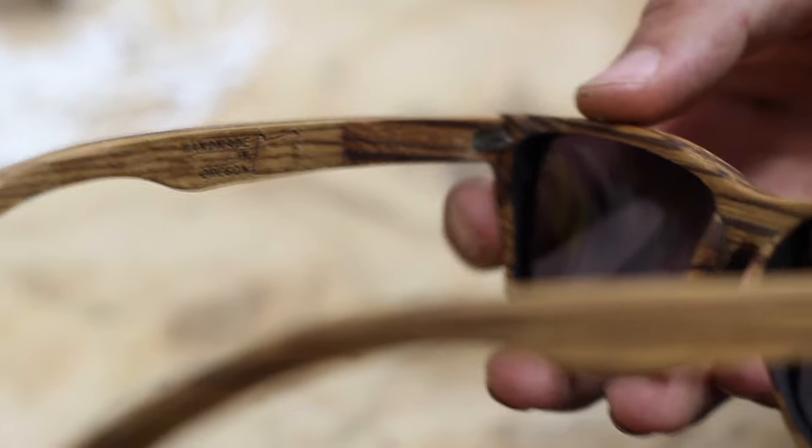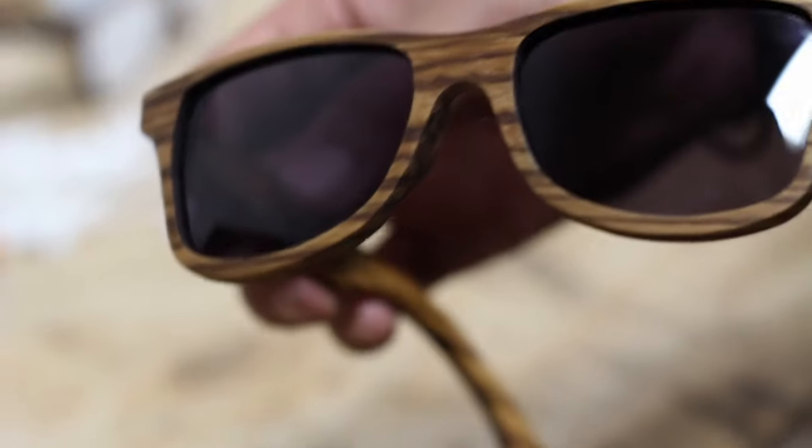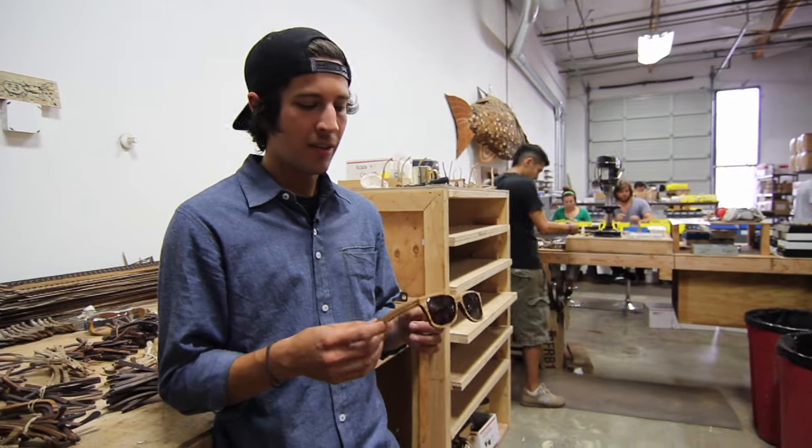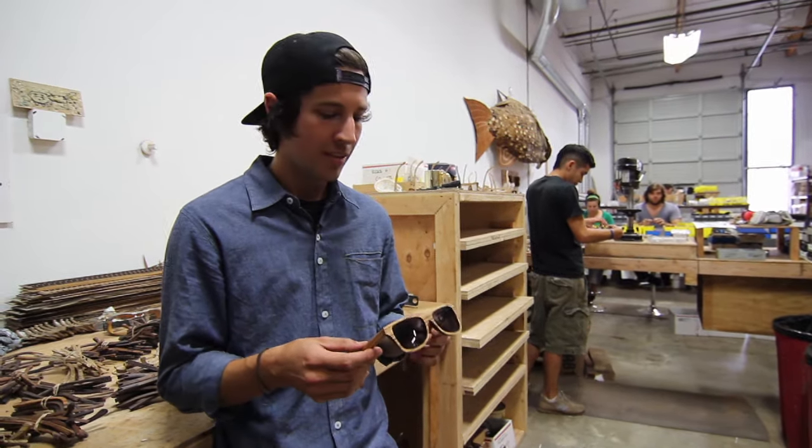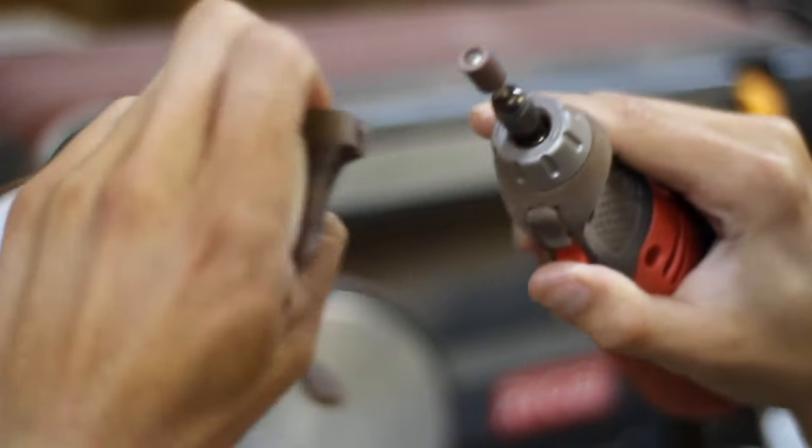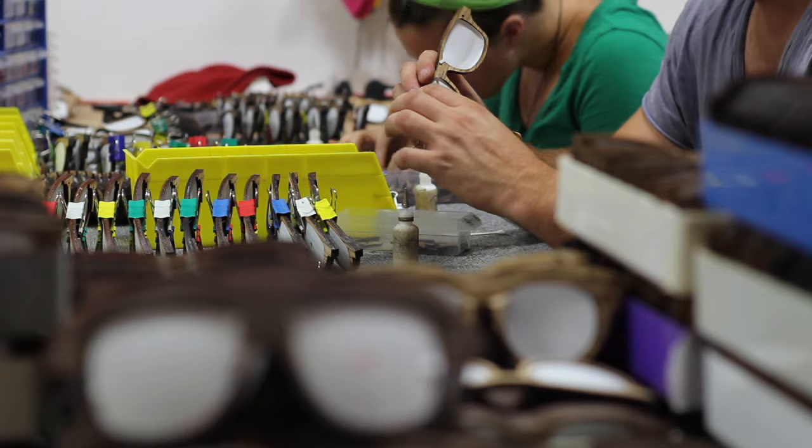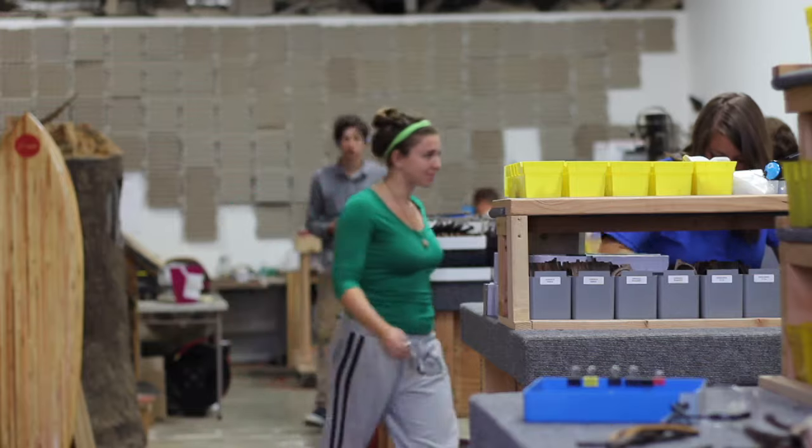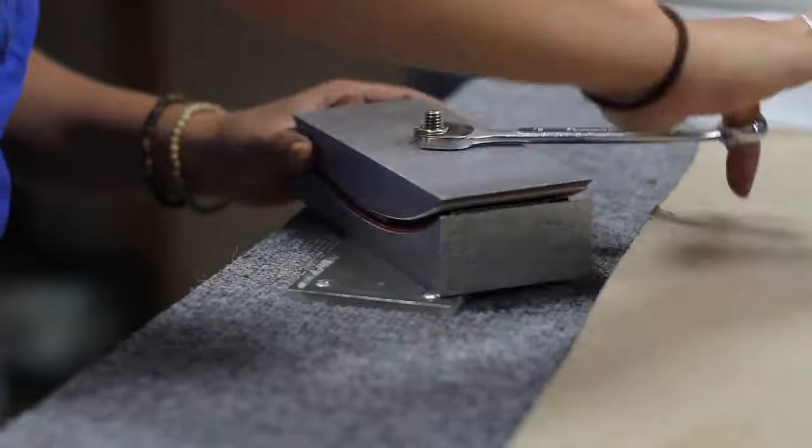The fact that everything about these sunglasses is made here in America is very important to all of us. Every little detail - nose pieces, hinge pockets, hinge covers - it's all hand sanded and done one at a time by about 20 of us altogether. There's nobody overseas doing any part of the woodworking process.